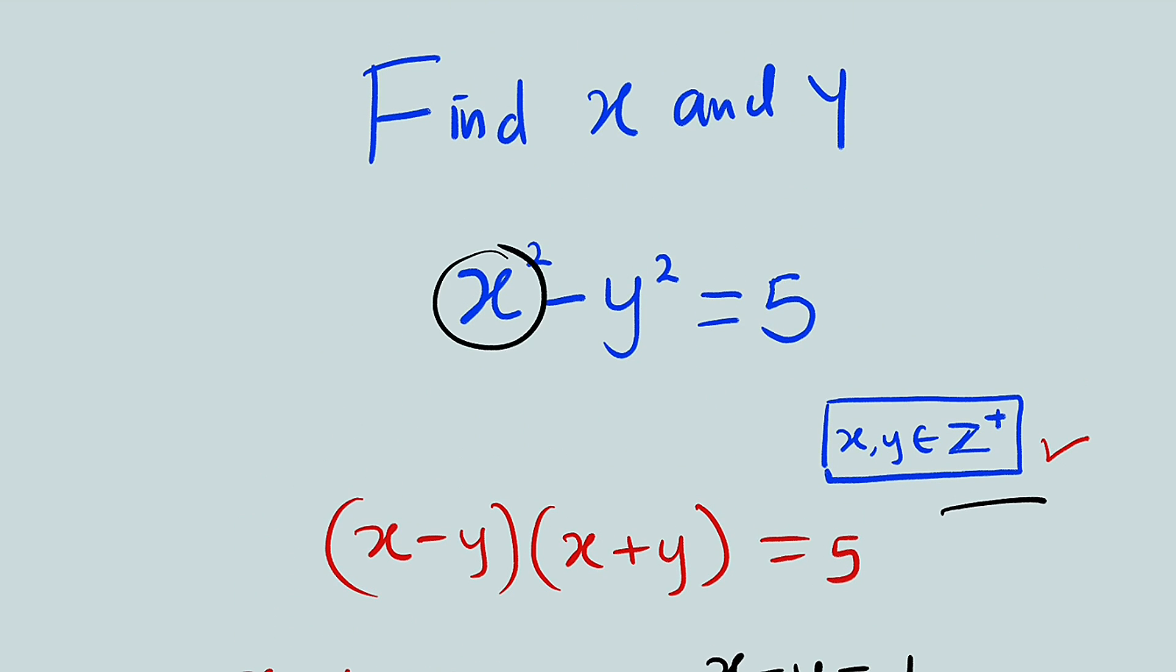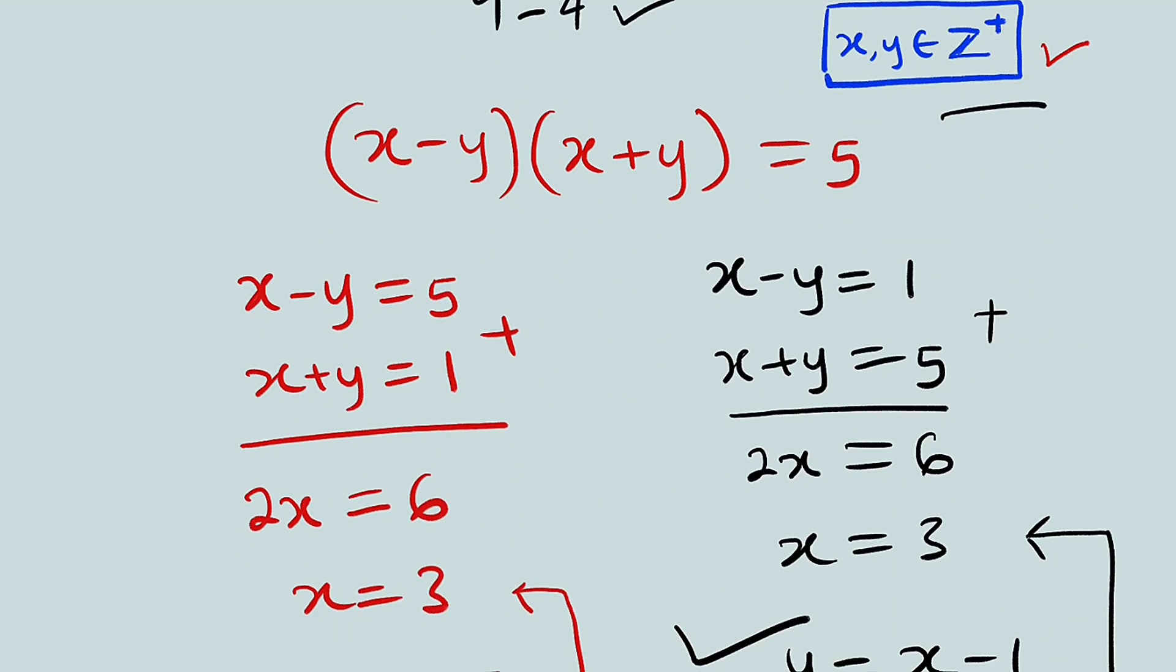When x is 3, we have 3 squared is 9. When y is 2, we have 2 squared is 4. It's 9 minus 4 equal to 5, definitely. And hence, we are right.